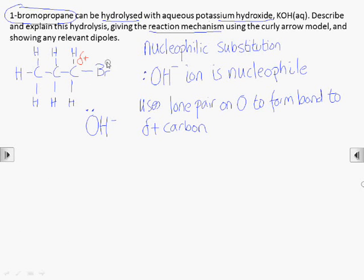The first stage of the mechanism is bond formation using the lone pair from the oxygen of the hydroxide ion to the carbon, which we show using a curly arrow to depict the movement of an electron pair.